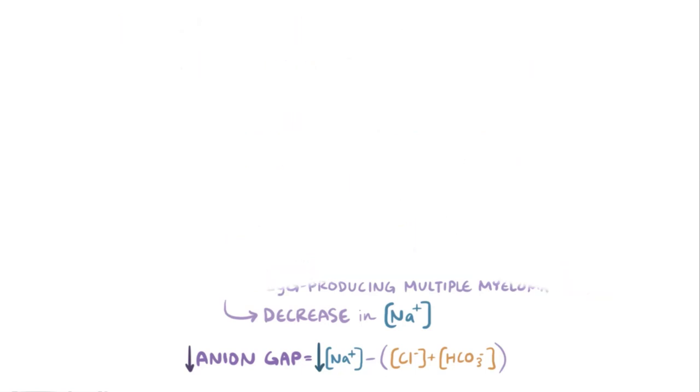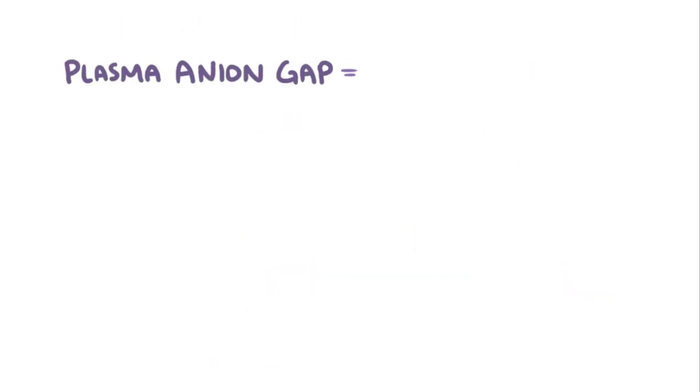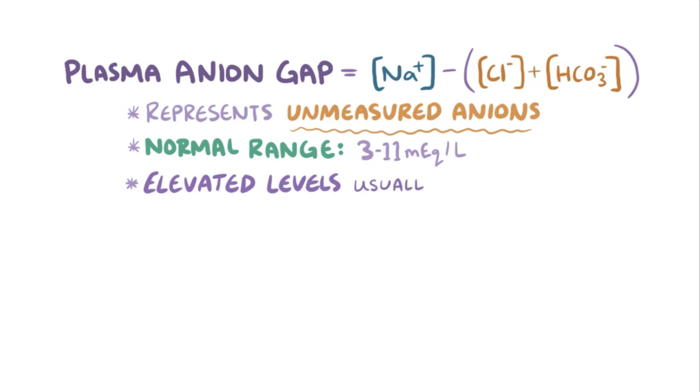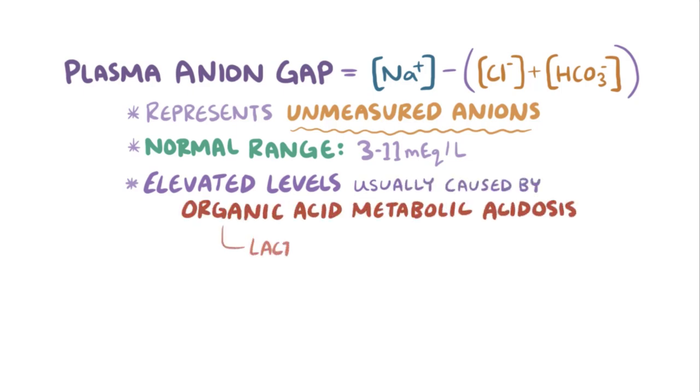As a quick recap, the plasma anion gap is the difference between the plasma concentration of sodium and the sum of the plasma concentrations of chloride and bicarbonate, and represents the unmeasured anions in the plasma. Its range of normal values is 3 to 11 milliequivalents per liter, while its elevation is almost always caused by an organic acid metabolic acidosis, like lactic acidosis and diabetic ketoacidosis.